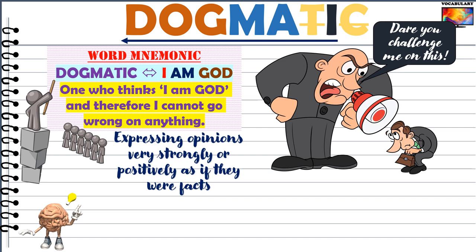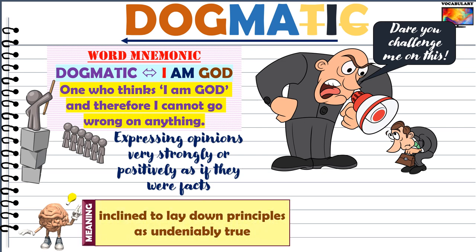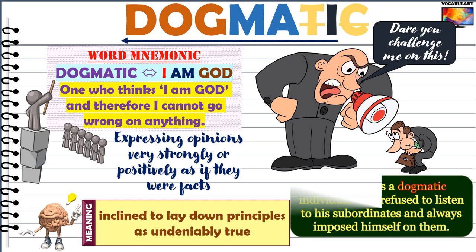For instance, a dogmatic person might insist that women should be covered from head to toe when stepping out in public — too much insistence on what he or she thinks should be the case ideally, rather than what actually is. The word dogmatic is the opposite of pragmatic, which we will cover shortly. According to the Oxford dictionary, dogmatic means inclined to lay down principles as undeniably true. On screen, a boss is shown saying 'Dare you challenge me on this?' — the boss was a dogmatic individual who refused to listen to his subordinates and always imposed himself on them.